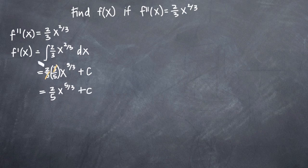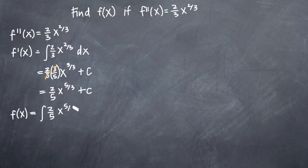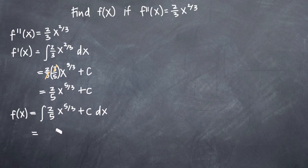That is f prime of x, our first derivative function. Now we need to take the integral of that to get back to f of x. So f of x will be equal to the integral of our first derivative function: two-fifths x to the five-thirds plus c, with our dx notation. We'll do the same thing we did last time — add one to the exponent. Five-thirds plus one gives us eight-thirds, so we'll get x to the eight-thirds. We take two-fifths, the coefficient, and divide it by the new exponent.